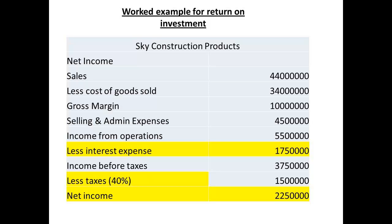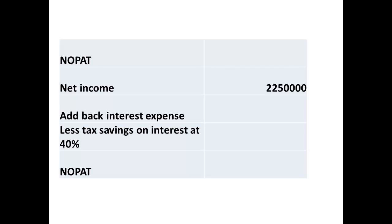Let us work through an example. The income statement for SKY Construction is shown. Highlighted are the areas that we are interested in to determine the net operating profit after taxes — specifically interest expense, taxes, and net income from the income statement. To determine the value for net operating profit after taxes, we start by taking the figure for net income, then add back the interest expense of $1,750,000. But we need to deduct the tax saving, which is 40% of the interest expense, giving a figure of $700,000. You should note that tax rates can change; we are using 40% just to make the calculations easier to follow. The result is a figure of $3,300,000 for the net operating profit after taxes.